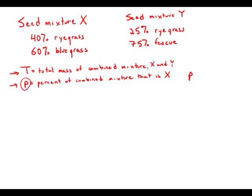Incidentally, I'm going to consider this, it's a percent, but I'm going to consider it as a decimal between zero and one. So that means that in the total mixture, P times T is the mass of X, mass of seed X. And one minus P times T is the mass of Y.